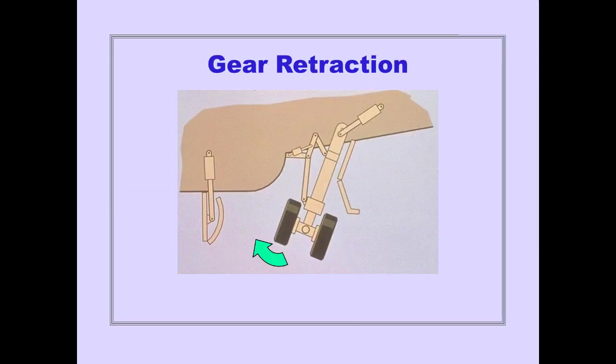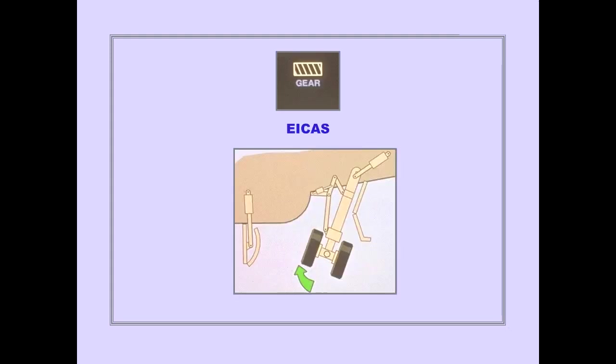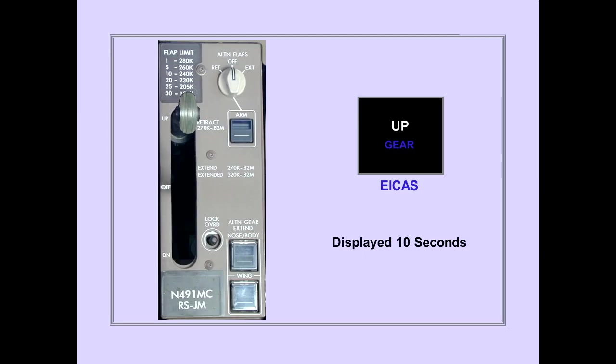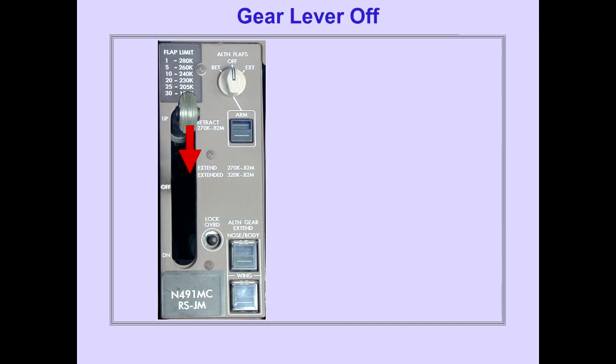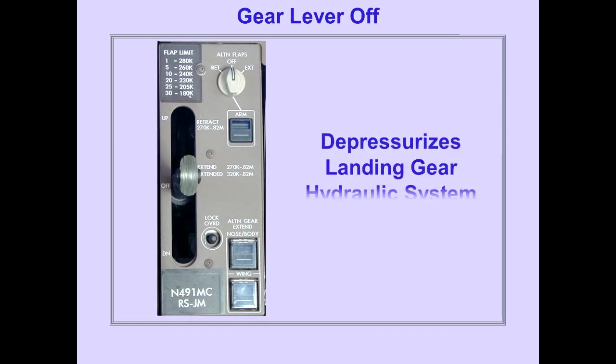The gear move to the up and locked position and the gear doors close. During gear retraction, brakes are applied automatically to stop wheel rotation. The ICAS gear in transit indication is displayed while the gear move to the up and locked position. The ICAS gear up indication is displayed when all gear are up and locked, and remains displayed for 10 seconds after all gear are retracted.